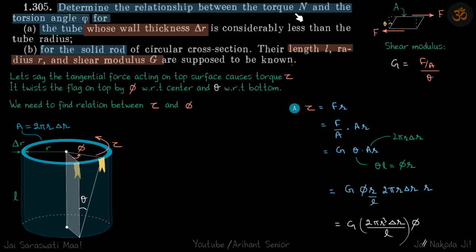Determine the relationship between torque τ and torsion angle φ for a tube whose wall thickness Δr is much less than the radius r. We need to find the relation between torque and the angle twisted by the top part of the tube if we fix the bottom part. Torsion means twisting — one end is fixed and the other end is twisted, moving by angle φ.